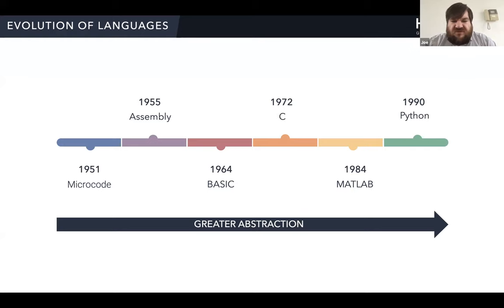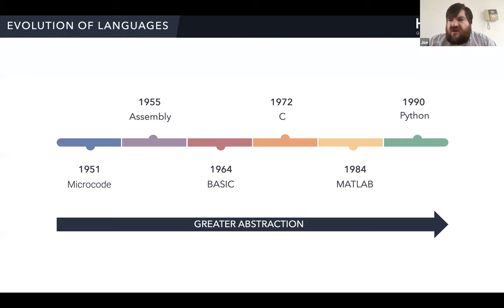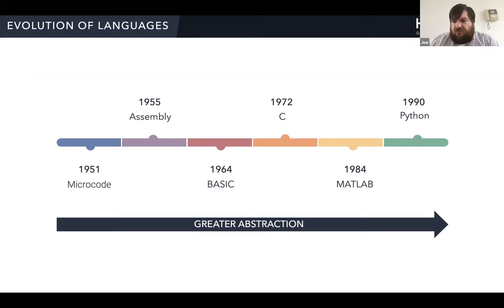Back in the fifties, you had things like microcode and assembly. Then as you moved on, you got languages like BASIC, C, and so on that had increasingly high levels of abstraction. If you write something in MATLAB or Python, you don't care at all about how your processor works — that's all taken care of by the interpreter. Our goal is to abstract to a high enough level that you can program both a conventional computer and a quantum computer using the same language.